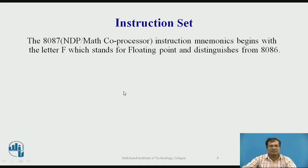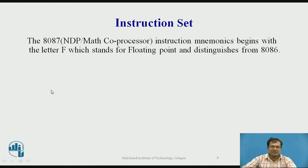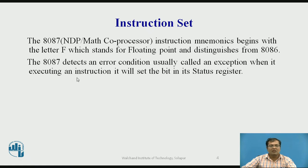Now we will see the instruction set of 8087. The 8087 is called Numeric Data Processor, or Math Co-Processor. Its instruction mnemonics begin with the letter F, which stands for floating point, distinguishing them from 8086 instructions. When the 8087 detects an error condition — usually called an exception — while executing an instruction, it sets a bit in its status register.